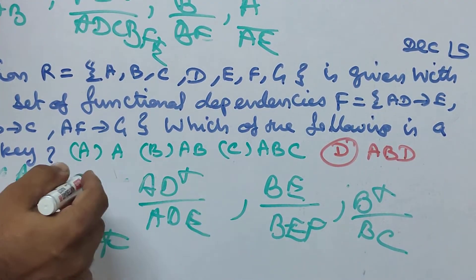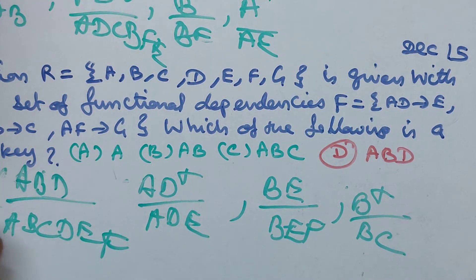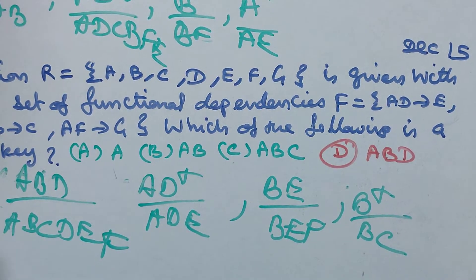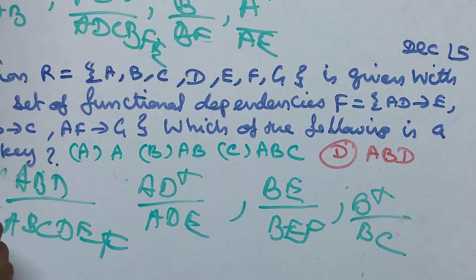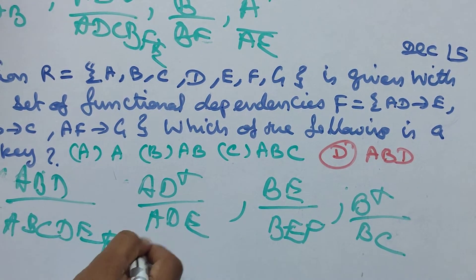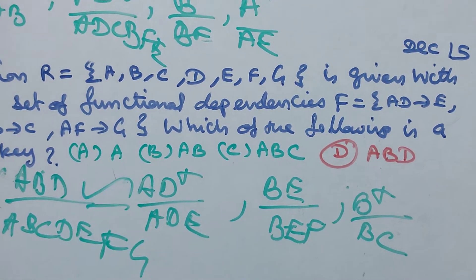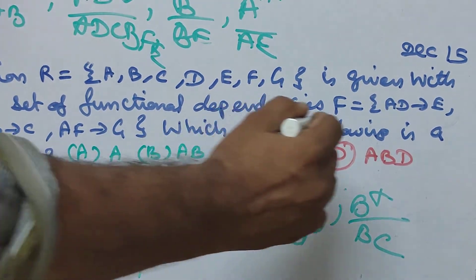B closure gives B, F. AF closure gives A, F, G. AF implies G, so A, F gives G. A, B, D closure gives G — the candidate key is A, B, D. That is the correct answer.